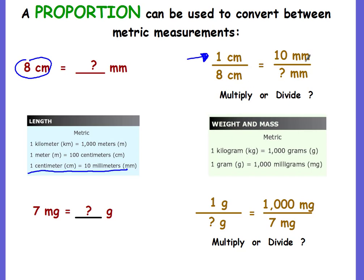The bottom part is replaced with what you're given and what you're trying to find. You're given eight centimeters, so that goes under centimeters. You're trying to find how many millimeters, so that's the unknown. Then figure out whether you multiply or divide. You're going from the known to the unknown, from 1 to 10, from 8 to the unknown — left to right — so multiply by 10. Eight times 10 gives you 80 millimeters.